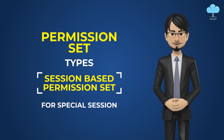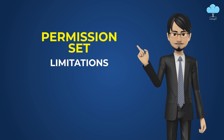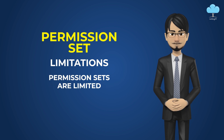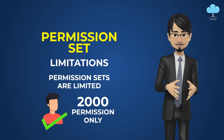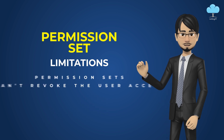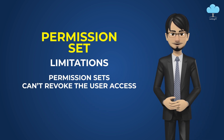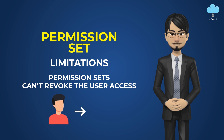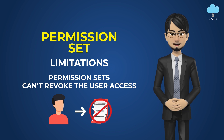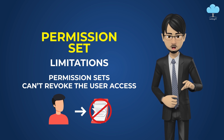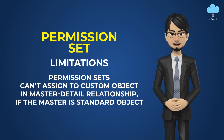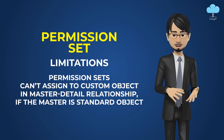Let's also understand some problems and limitations with permission sets. Permission sets are limited — for example, you can create approximately 2,000 permission sets, but that depends on your Salesforce features or editions. Also, permission sets cannot revoke user access. If a user has access to a particular record via their profile, we cannot revoke that access by permission set — permission sets are useful only for giving facilities. Additionally, permission sets cannot be assigned to a custom object in a master-detail relationship if the master is a standard object.